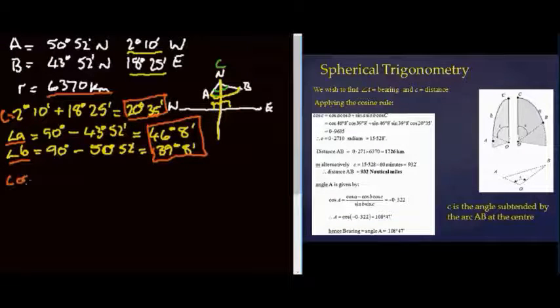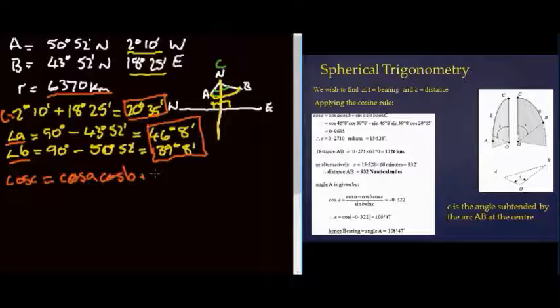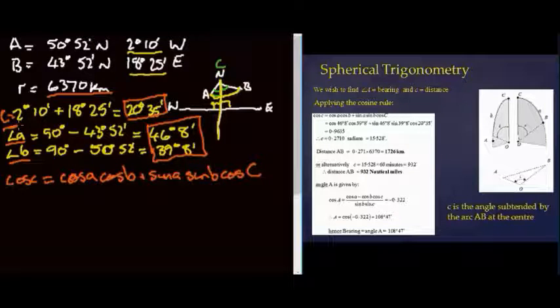So I've got cos c, which is the angle that we're looking for, which will give us our distance, is cos a cos b plus sine a sine b cos big C. And there's big C there. That's the big C that we're talking about. Now I'm not going to write them in because you can see they've been plugged in over here, and I encourage you to stop the video, plug those figures in.